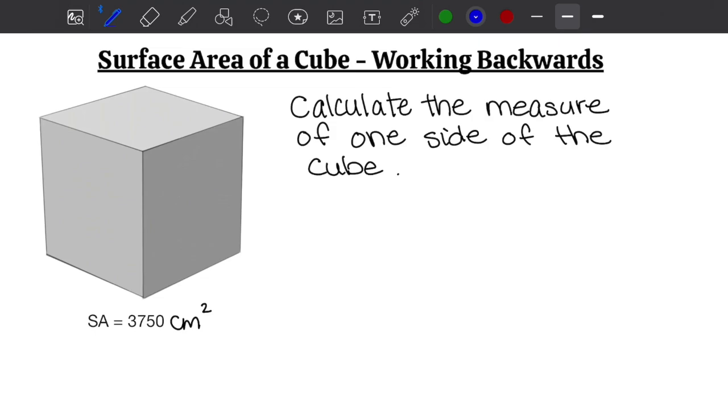Hello. In the previous video we looked at how to calculate the surface area of a cube using the formula surface area equals 6x². We said that x² comes from the area of one face of our cube - so if this is x and this is x, the area is x². The cube has six faces, so we multiply this area by six.